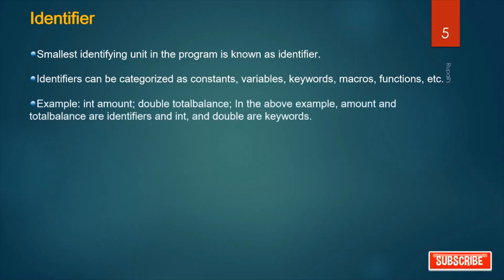Example: if I write int amount, double total balance - in this example amount and total balance are the identifiers, and int and double data types are called keywords.